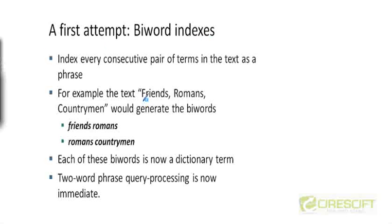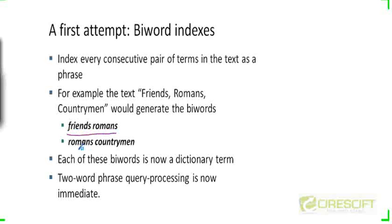For example, if you look at the text 'friends, romans, countrymen' — assuming that this is the text of a document — earlier we saw that there were three terms generated from this document. In a biword index, there would be two terms: 'friends romans' and 'romans countrymen.' So you are picking consecutive pairs of terms and making them entries in your dictionary.